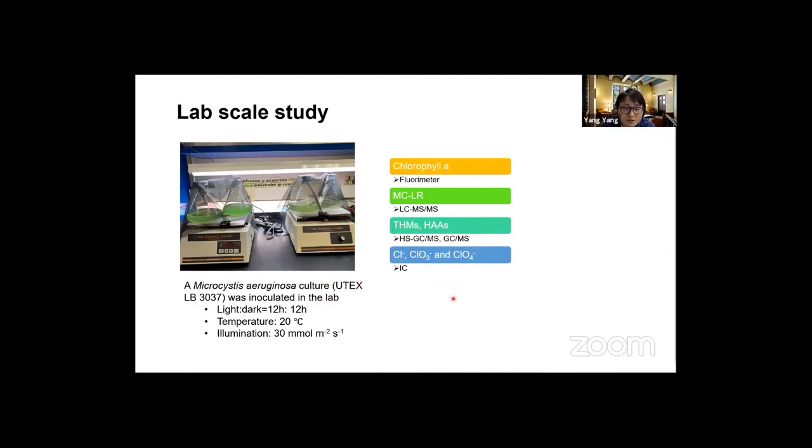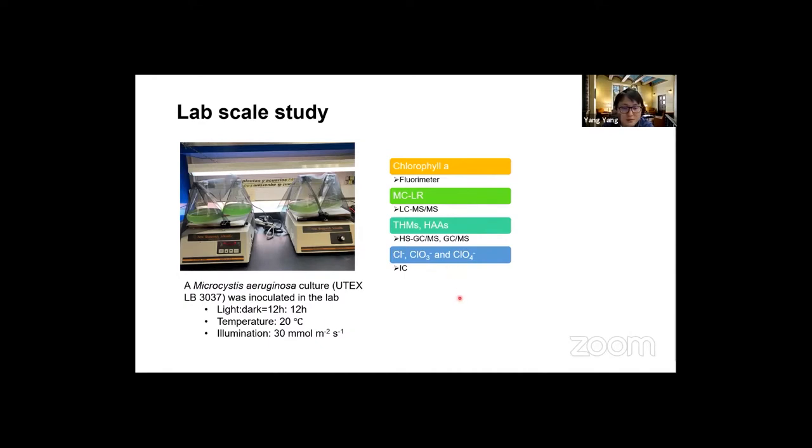We have small electrode samples for bench scale study. We also manufacture full size electrodes for field application. First of all, we need to verify the feasibility of this method in our lab. We cultivate algae. We started this project in winter. There's no way we can find algae in upstate New York. We purchased algae samples and cultivated them in our lab. We also established methods covering the analysis of chlorophyll A, which is an index of algae concentration.